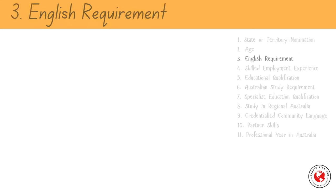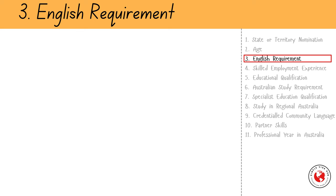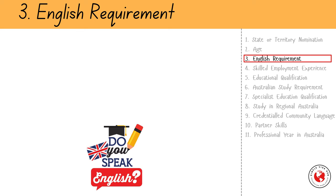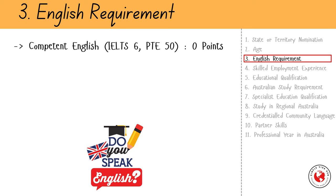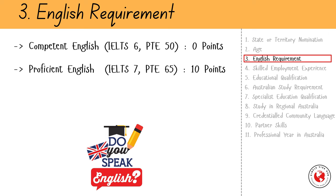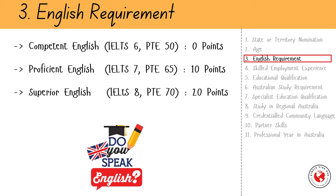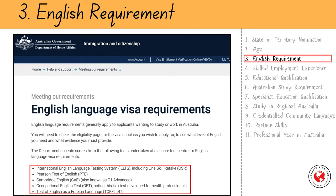The next factor is English requirement. You are required to meet a minimum level of competence in English to be eligible to apply. Competent English is IELTS 6 or an equivalent in PTE, which is 50 — there are no points given for competent English. There are two higher levels that will give you points. Proficient English — scoring 7 in each band of IELTS or 65 in PTE — earns you 10 points. Superior English — scoring 8 bands in IELTS and 70 in PTE in each module — earns you 20 points. There are five accepted English tests.